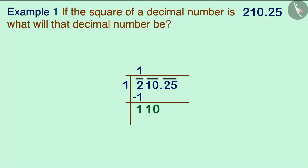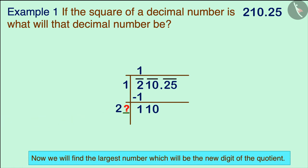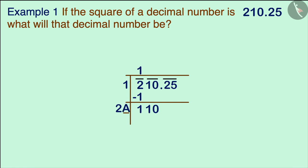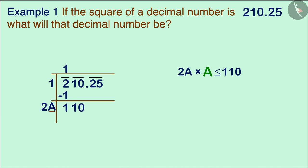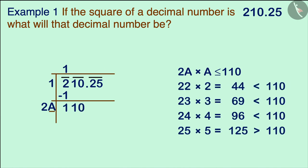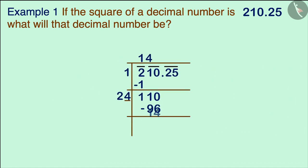We write the number under the next bar alongside the remainder, making the new number 110. For the new divisor, we multiply 1 by 2, writing it as the new divisor and leaving a blank space to the right. We then find the largest digit for the blank space — suppose it is a — such that 2a multiplied by a gives a product less than or equal to the new number. That digit is 4, which becomes the second digit of the quotient.